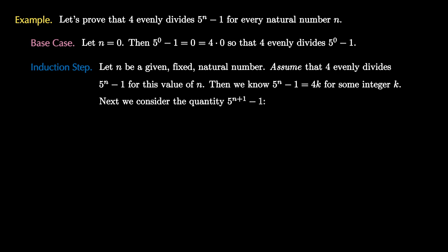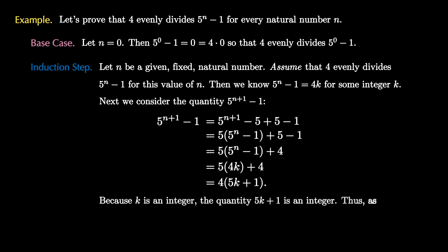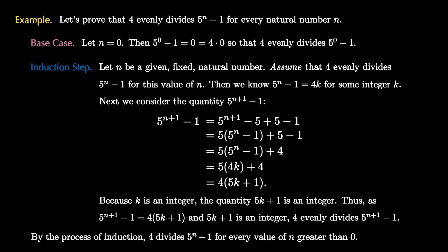With this major assumption in hand, consider the quantity 5 raised to the n plus 1 minus 1. We rewrite it as 5 to the n plus 1 minus 5 plus 5 minus 1, adding zero. Factoring out 5 gives 5 times (5 to the n minus 1) plus (5 minus 1), which simplifies to 5 times (5 to the n minus 1) plus 4. Since 5 to the n minus 1 equals 4k by our assumption, we substitute to get 5 times 4k plus 4, then factor out 4 to get 4 times (5k plus 1). Since k is an integer, 5k plus 1 is an integer, so 4 evenly divides 5 to the n plus 1 minus 1. We proved both the base case and the induction step, so mathematical induction guarantees that 4 evenly divides 5 to the n minus 1 for every value of n greater than or equal to 0.